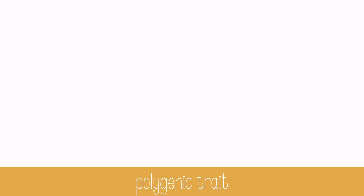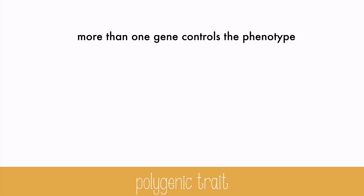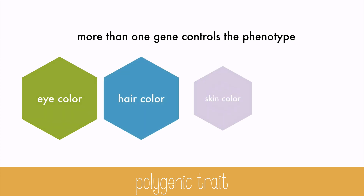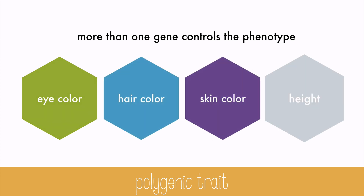Another strange kind of trait is a polygenic trait. Polygenic traits have more than one gene that controls the phenotype. There are over 9 genes that control eye color. Other polygenic traits include hair color, skin color, and height. These are not fully understood yet, and their inheritance patterns are still being studied.